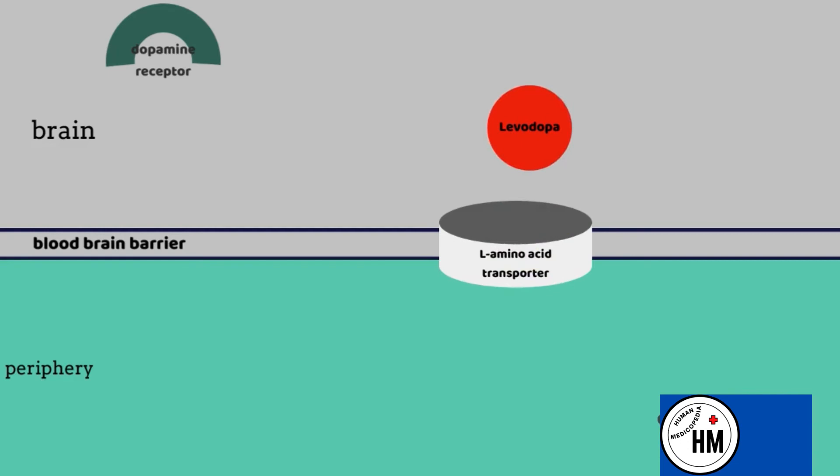After entrance of levodopa to the brain and its conversion to dopamine, dopamine can be converted into 3MT by COMT enzyme. But tolcapone, a COMT inhibitor, inhibits the COMT enzyme to limit these reactions and increase the half-life of dopamine.